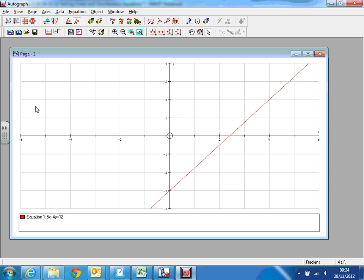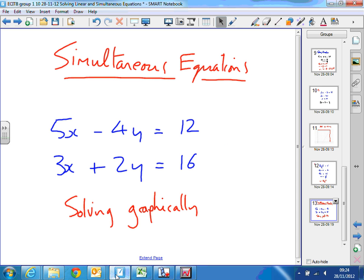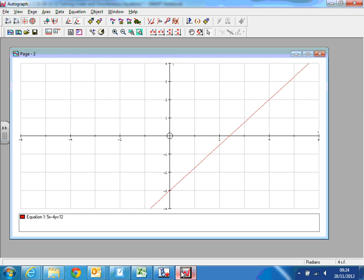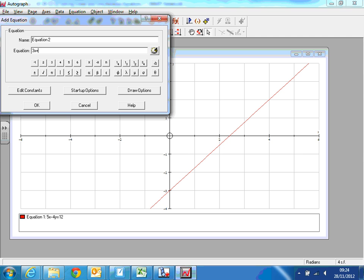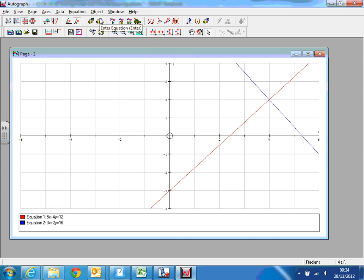Now plot the second graph: 3x plus 2y equals 16. And they cross. I wasn't expecting it to be an exact answer actually. I just made this up, so I'm very surprised it came out. It looks as though x equals 4 and y equals 2 on that graph.